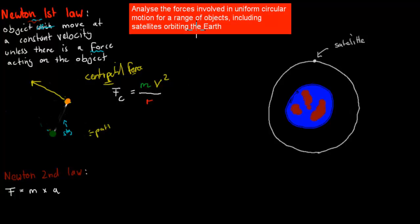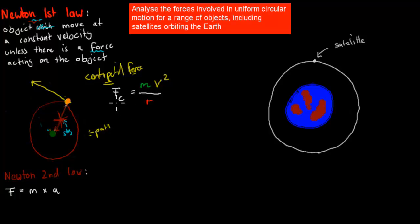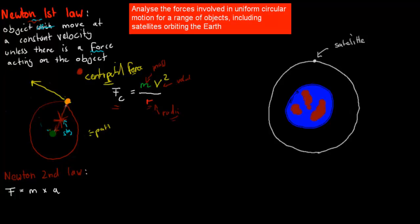Analyzing the forces involved in uniform circular motion: we have the centripetal force acting inward, and the velocity going in a tangent. Because of those two, we get that circular path. As soon as the centripetal force is cut, the object goes back into its normal tangent path. The formula for centripetal force is: F equals mass times velocity squared divided by radius. The further the radius, the more force you need to maintain the same speed; the shorter the radius, the less force required.